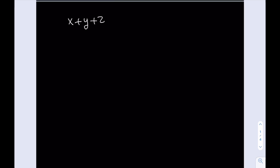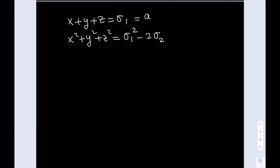Let's take a look at the solution. The first one is obvious: x plus y plus z equals sigma 1, which equals A. Then I need to write the second equation: x squared plus y squared plus z squared, which I can write as sigma 1 squared minus 2 times sigma 2. And this is going to give me B squared. That's my second equation.